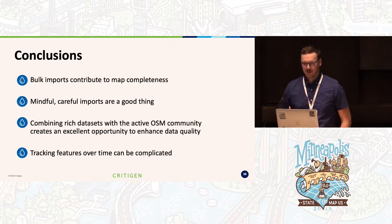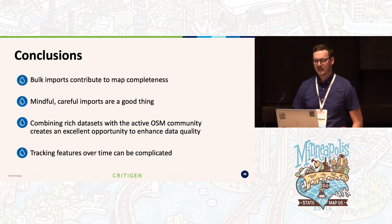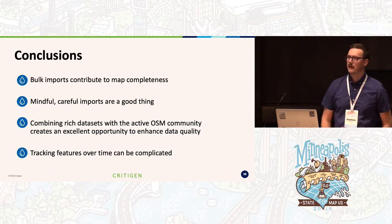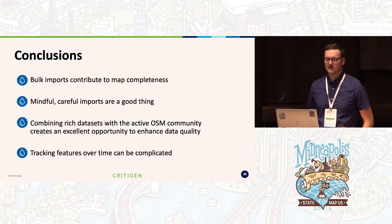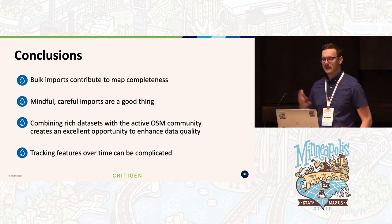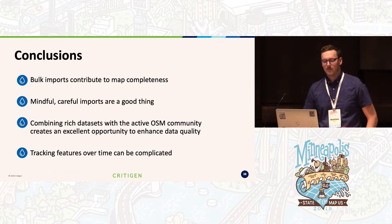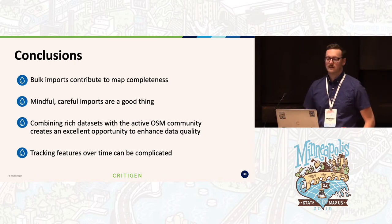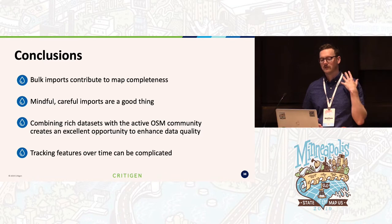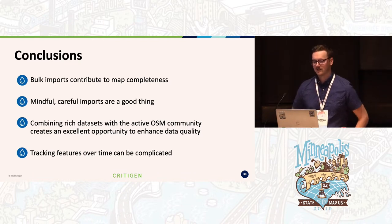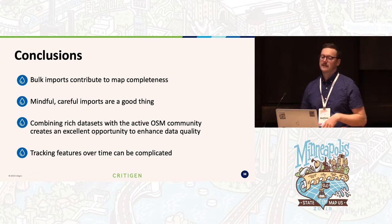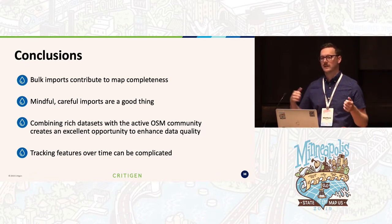With all this, we wanted to conclude what it means. In terms of the role that bulk imports can play, this illustrates how they can really contribute to map completeness. However, it speaks to the value of mindful, careful imports. If NHD data was much less accurate, you could imagine a lot more community edits being needed to bring it up to OSM standards. Combining rich datasets like NHD with an active OSM community creates an excellent opportunity to enhance data quality — if there is true change in the landscape, the OSM community will reflect it. Tracking features over time is complicated due to imports being replaced, deleted, or added, so you can't simply track one OSM ID over time and expect to capture everything.